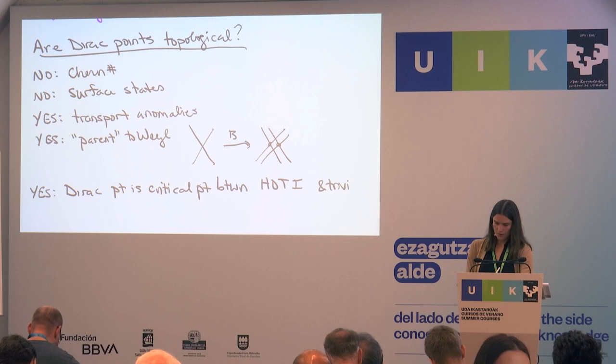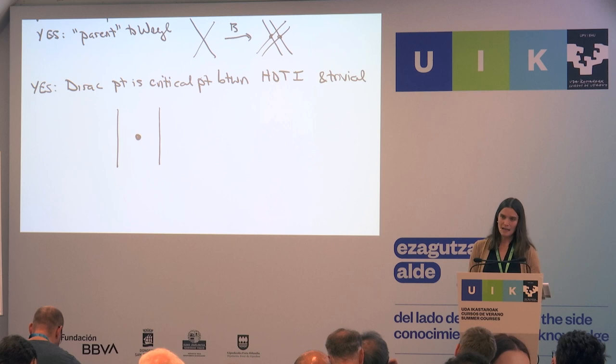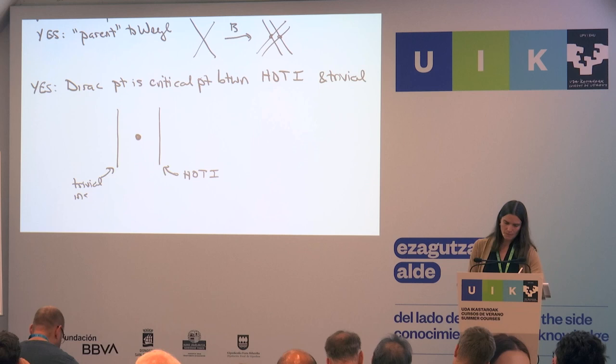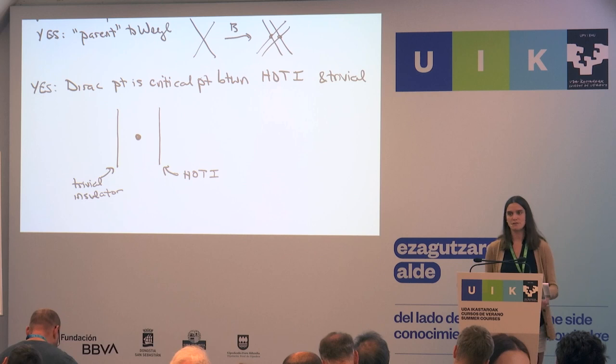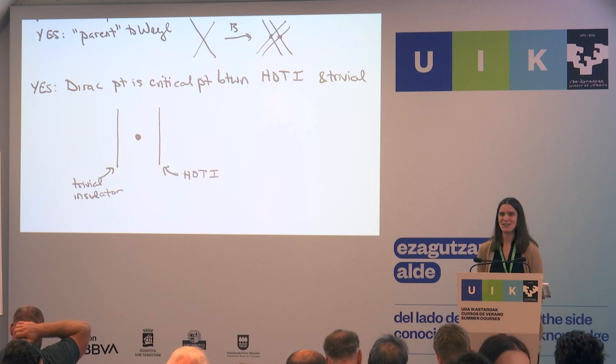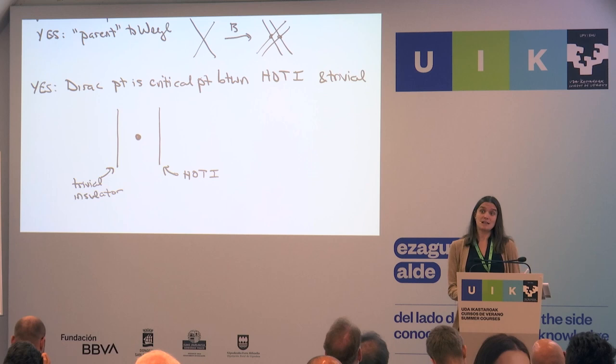The Dirac point is a critical point between a higher-order TI and a trivial insulator. If this is our Dirac point, I can consider planes on either side of it. What always happens is that one of these planes will be a 2D higher-order TI and the other one will be a trivial insulator. 2D higher-order TIs are protected by rotation symmetry, time reversal, and inversion symmetry — and these are the exact symmetries that protect Dirac points.